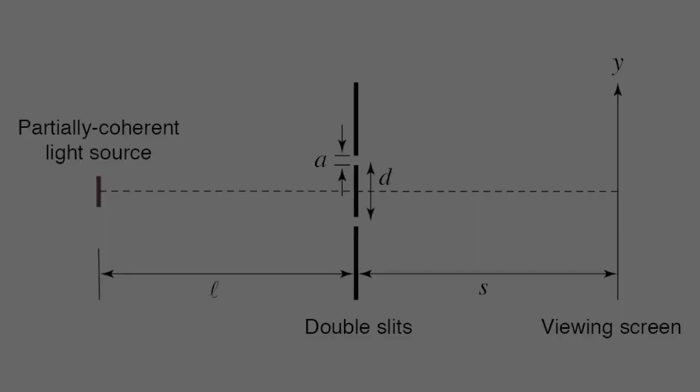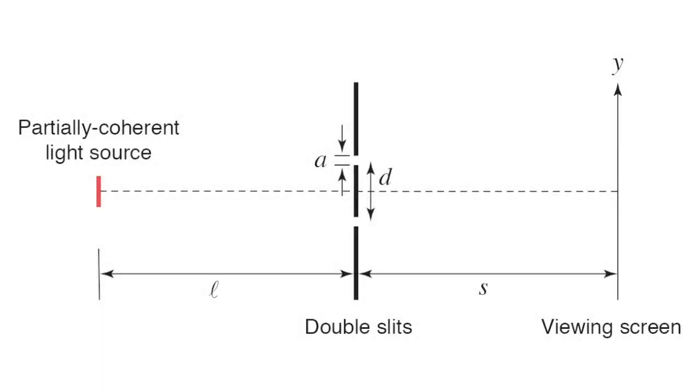In this paper, we describe an experiment suitable for undergraduate students to measure a double-slit interference pattern using a partially coherent light source.